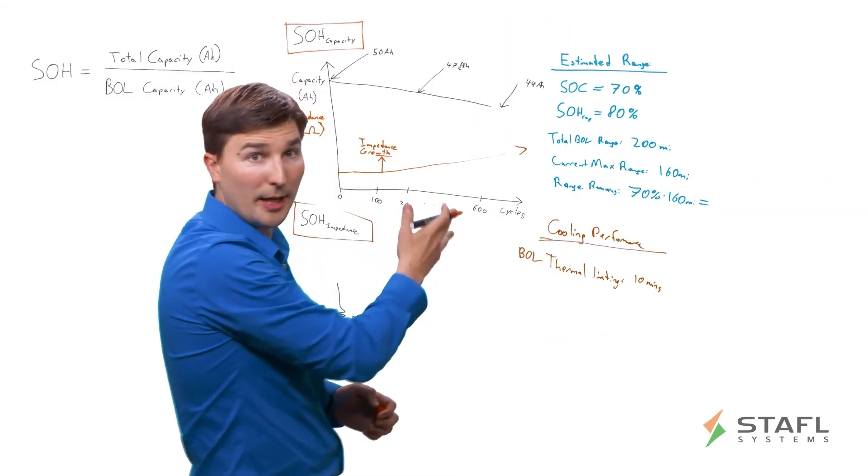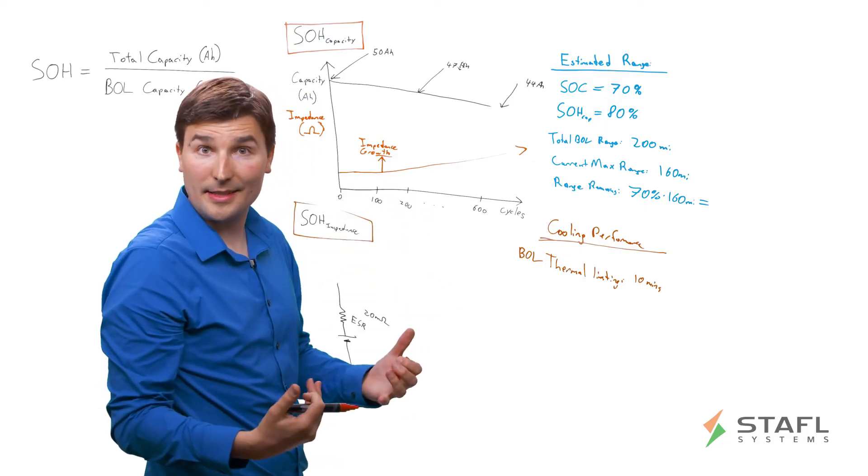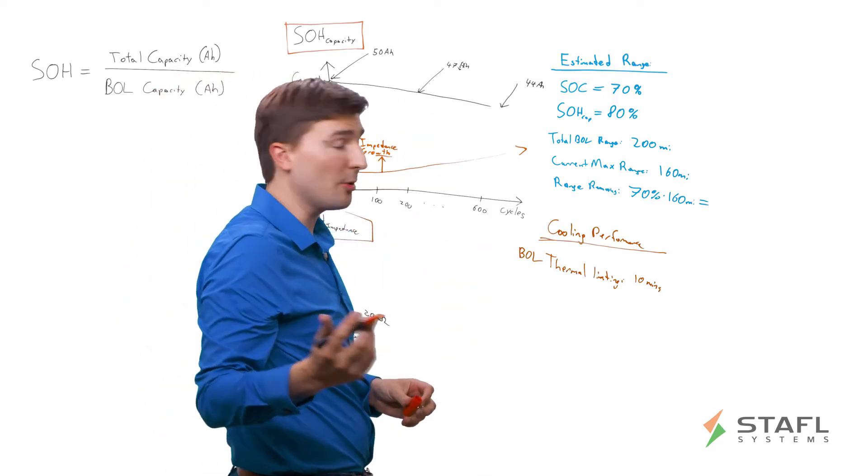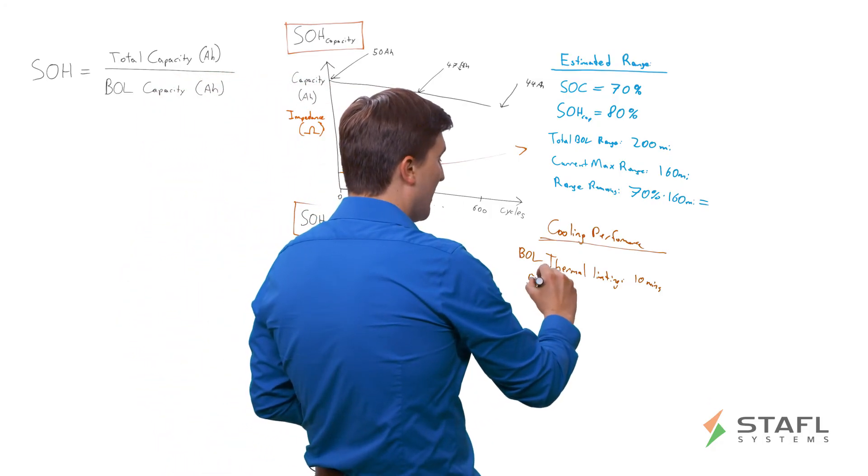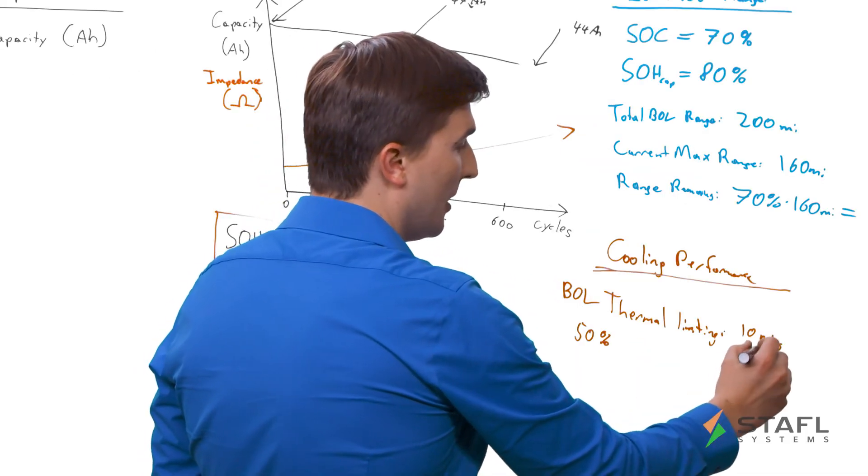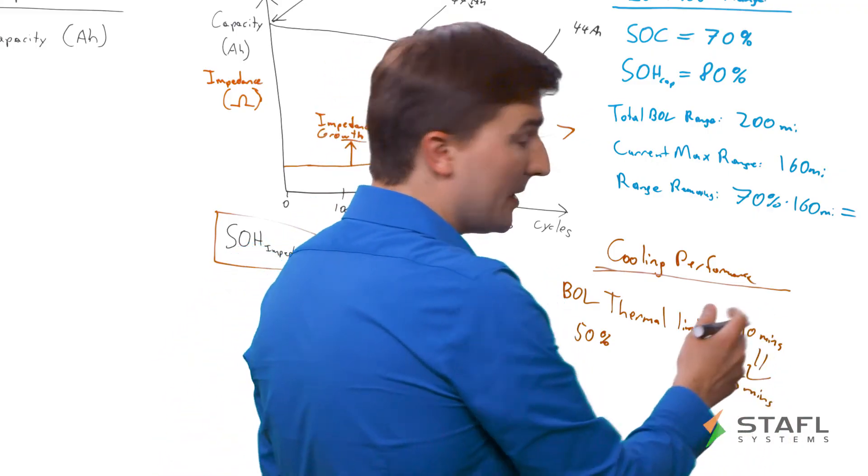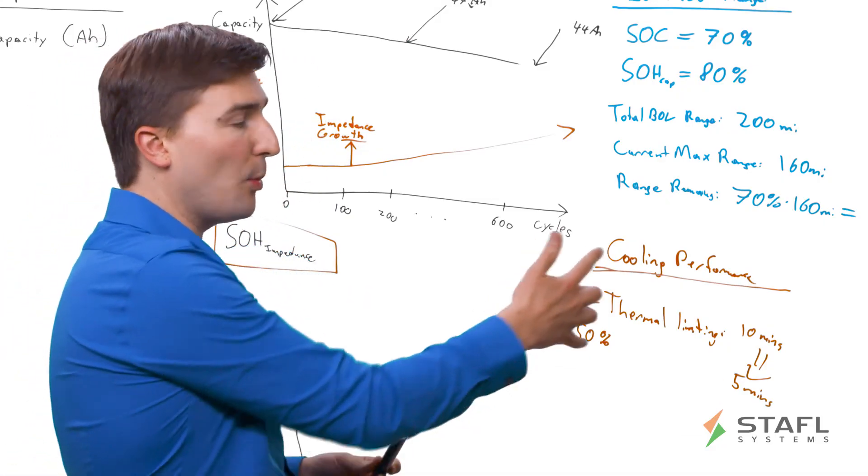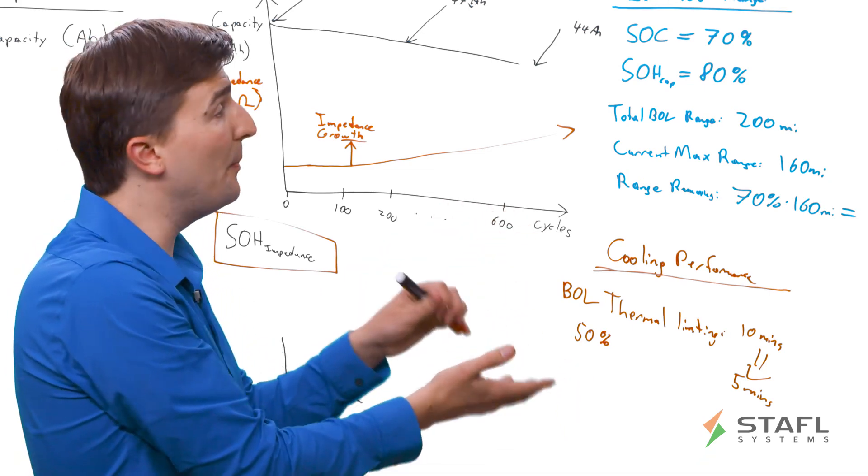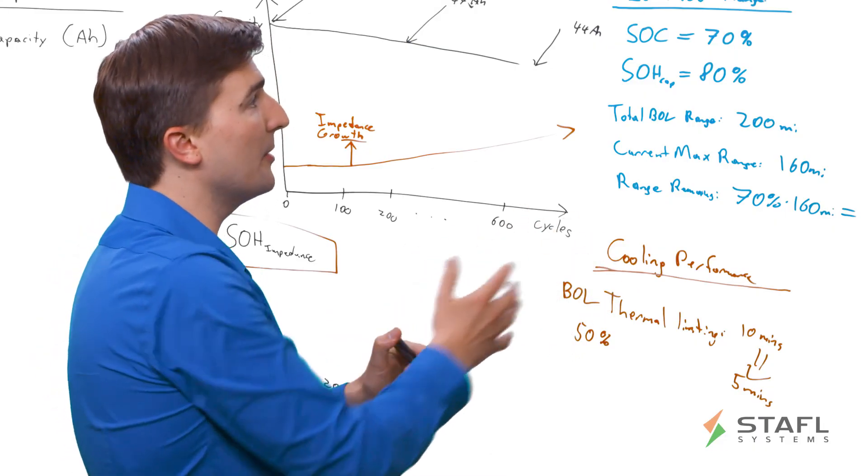Now, assuming that you've gone through a few races, maybe you have 50 to 100 cycles under your belt. They were pretty high intensity cycles, which means that the battery degradation was worse than expected. So therefore your impedance growth, say, was about 50%. Then you potentially would have a situation where now your thermal limiting, instead of 10 minutes, is now after 5 minutes. So a pretty significant decrease in performance. So it's very important to understand and quantify these values so that when you are making estimations about the ability of your battery pack to perform over time, you're able to always give accurate estimations.